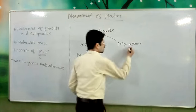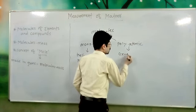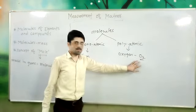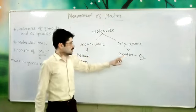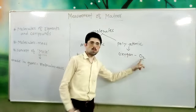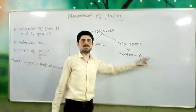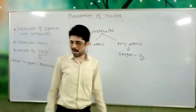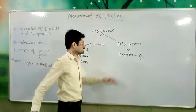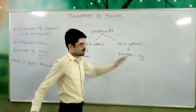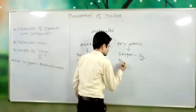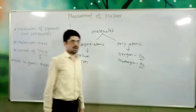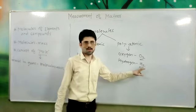In the polyatomic category we have different examples like oxygen. Oxygen is a diatomic molecule, meaning in a single molecule of oxygen there are two atoms of oxygen. Similarly, hydrogen is also a diatomic molecule — it has two atoms of hydrogen in its single molecule.